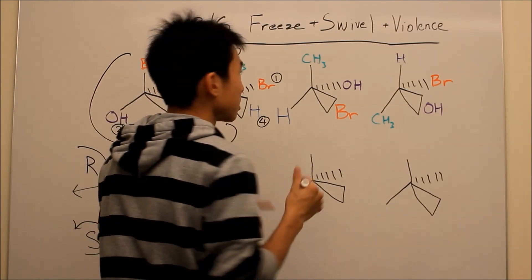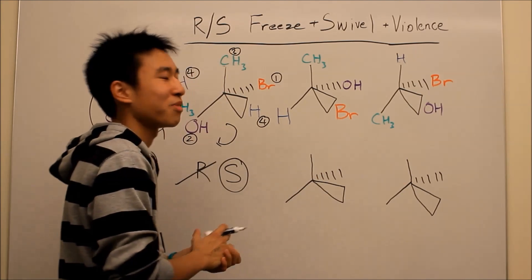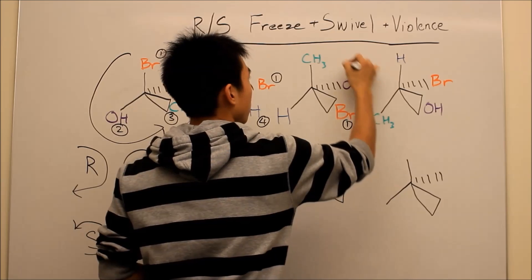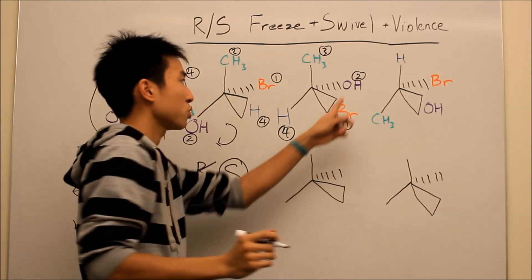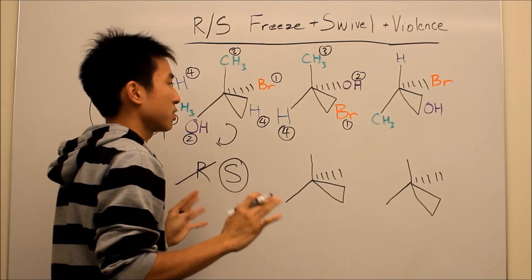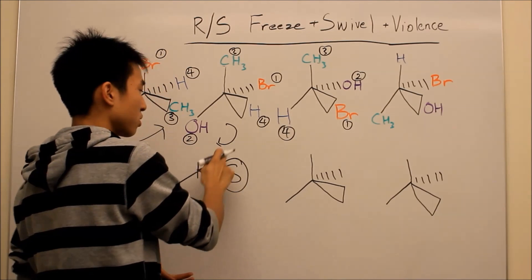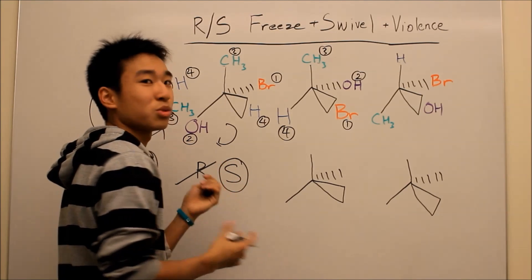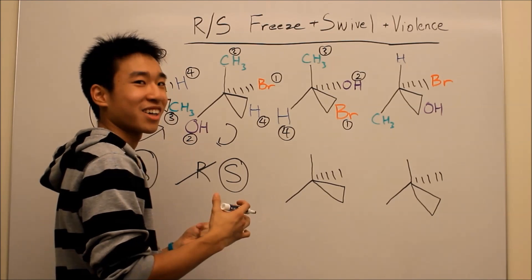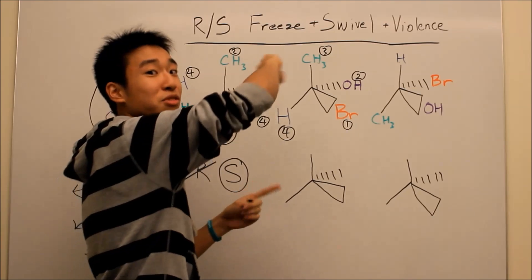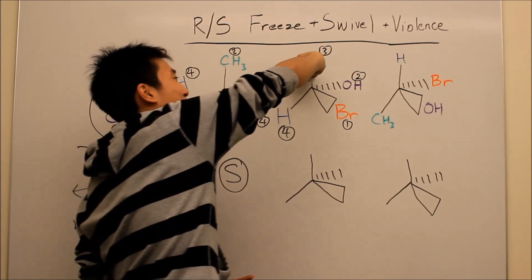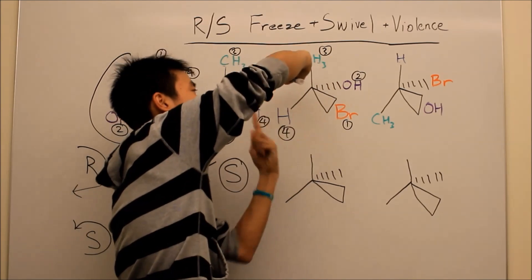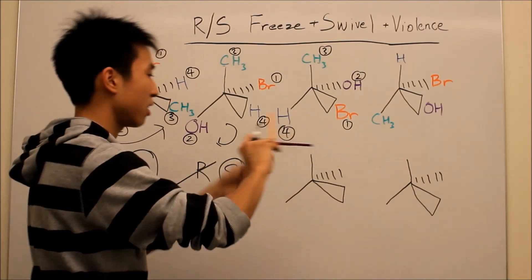Next one — this gets a little more confusing, and this is actually my favorite part. In this tetrahedral here, the lowest functional group is on the side. A lot of times people have this misconception that if it's on the side, you just cross out what you think it is and flip it. But no, that's not how you do it. I use a little trick called freeze and swivel. Think of the song 'Teach Me How to Dougie' — I'm going to teach you how to freeze and swivel.